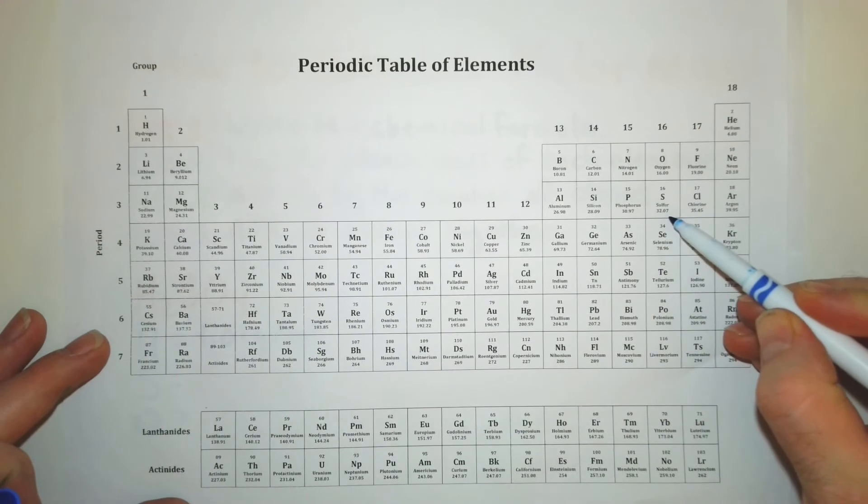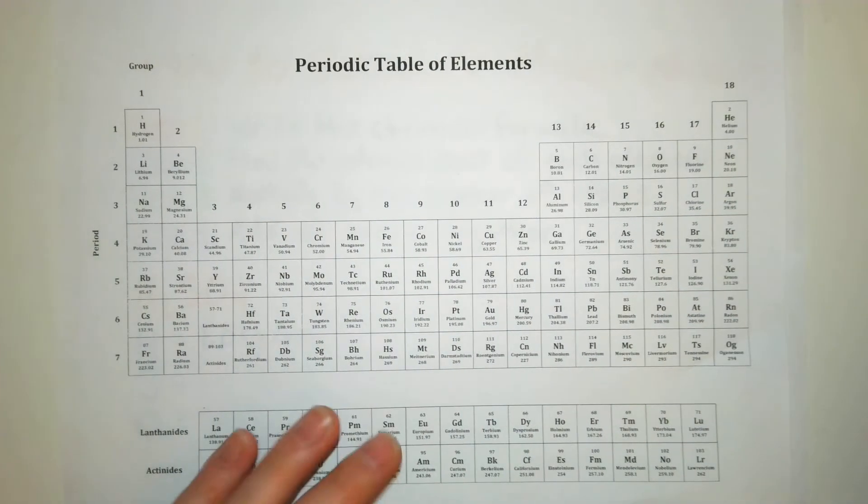Okay and for our sulfur we have 32.07 grams per mole.